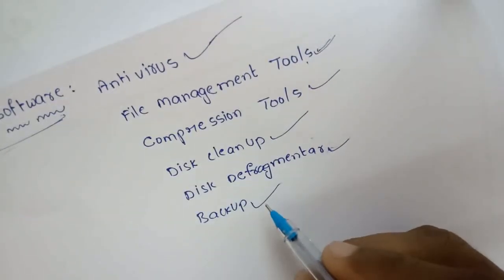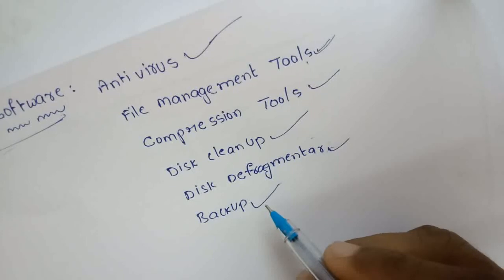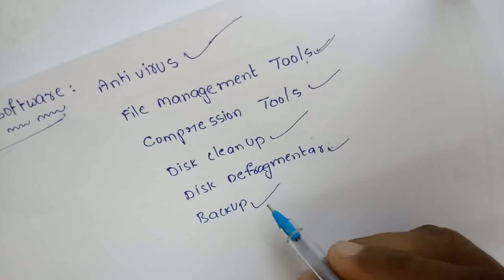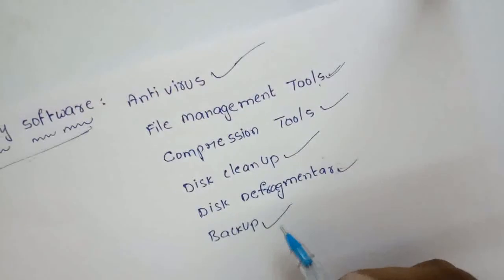Next is backup. Backup utility enables backing up of files, folders, databases, and complete disks. Backups are taken so that data may be restored in case of data loss. Backup is a service provided by all operating systems. In standalone systems, backup may be taken on the same or a different device. In network systems, backup may be done on backup servers.